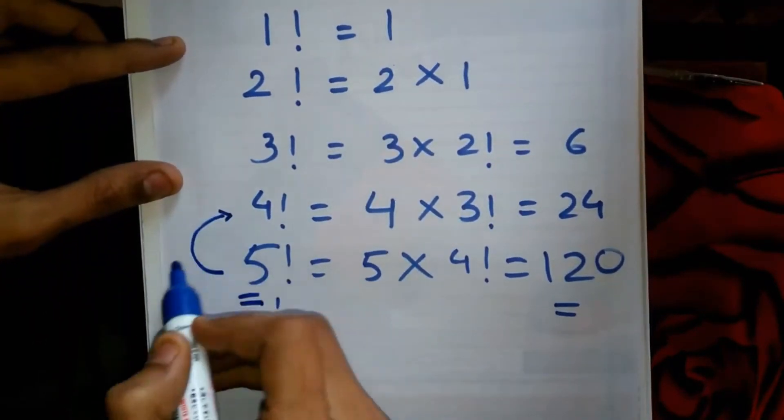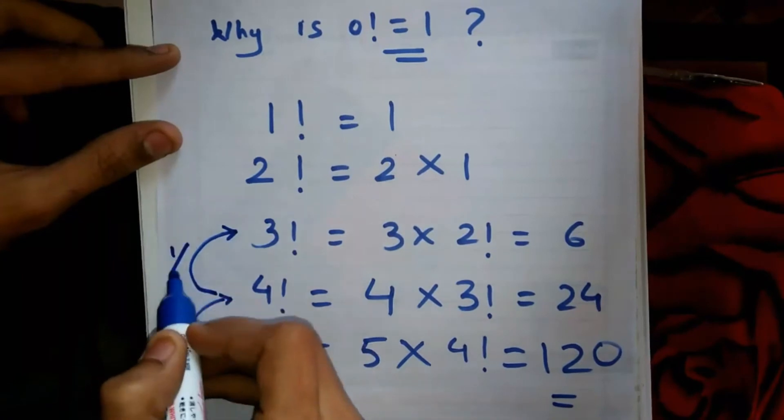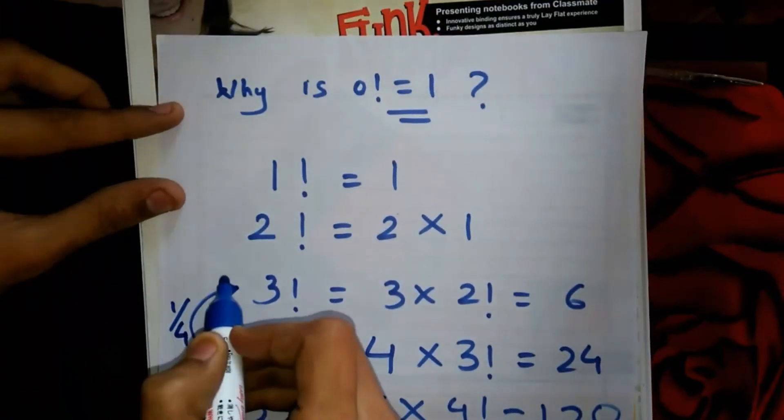Using the same technique, if we divide 5! by 5, we get 4!. When 4! is divided by 4, we get 3!. The process continues.